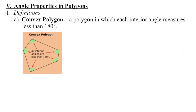A polygon is a closed two-dimensional figure that contains at least three sides, like a triangle. A convex polygon is a polygon where all inside angle measures are less than 180 degrees. This is an example of a convex polygon — it's a closed two-dimensional figure and each of those angles is less than that 180-degree straight angle.